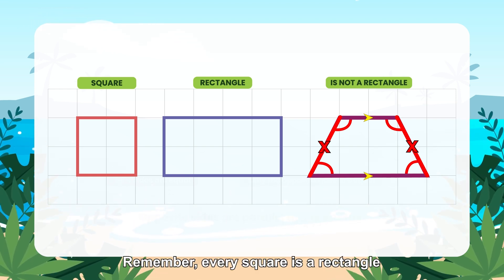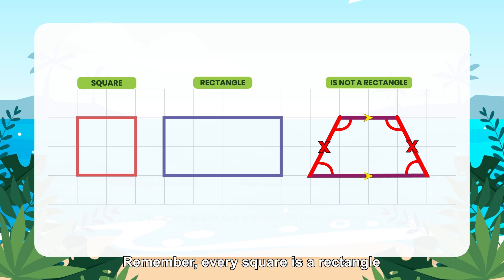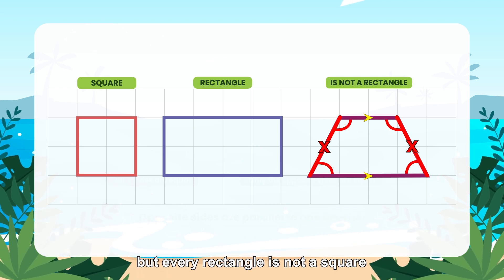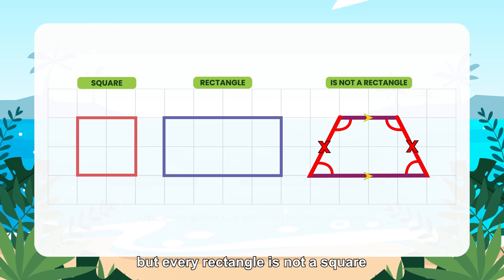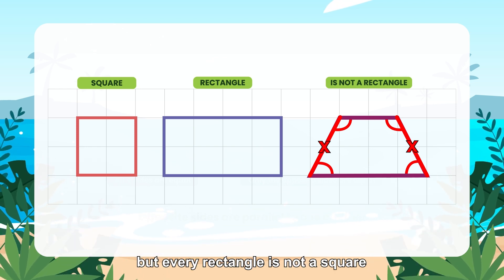Remember, every square is a rectangle, but every rectangle is not a square.